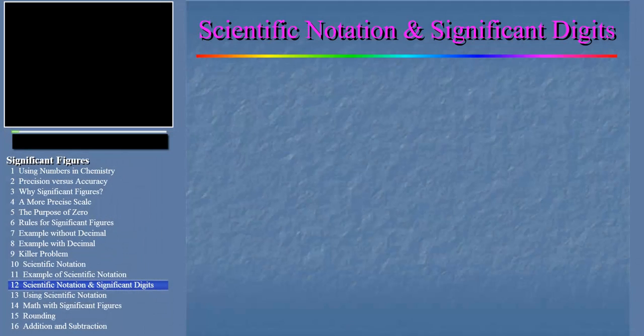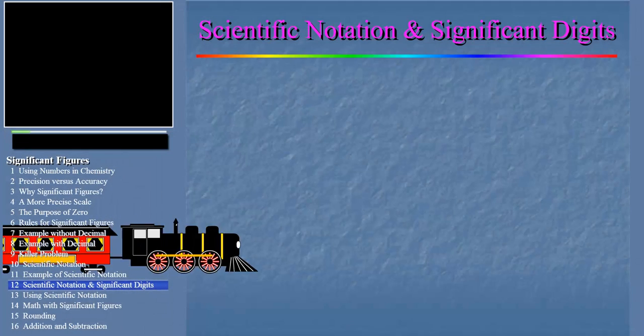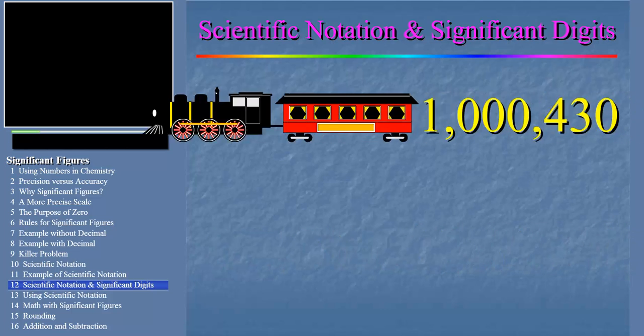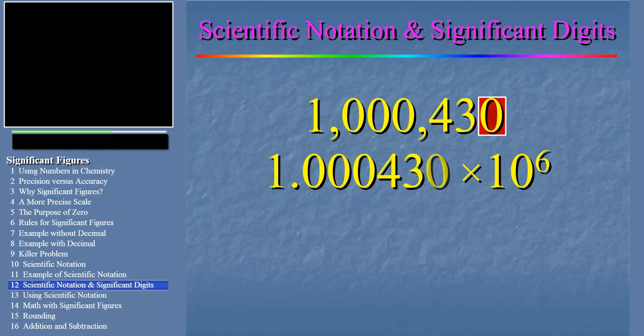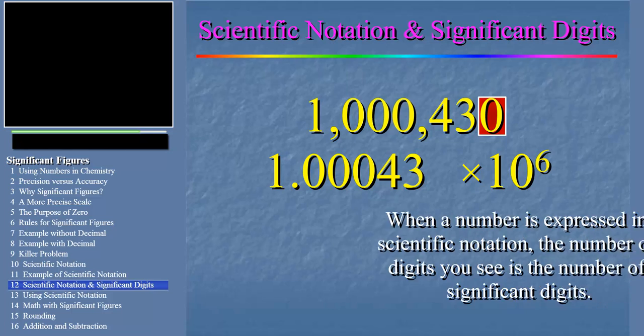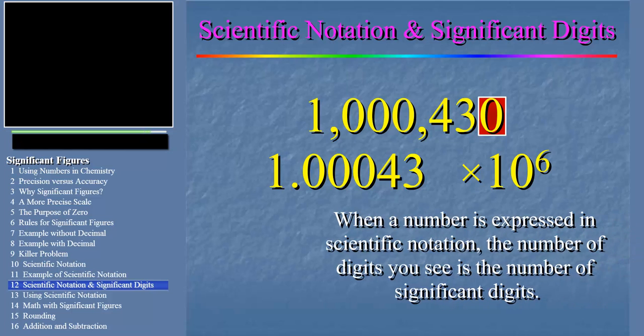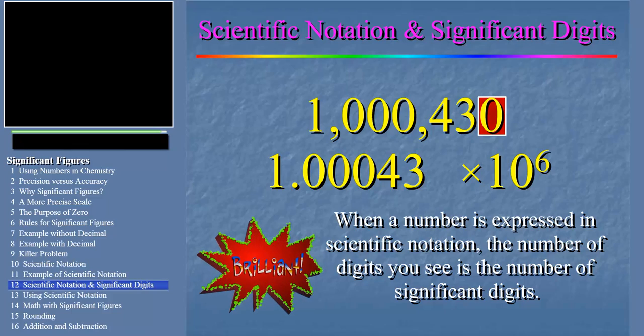Remember I mentioned that writing numbers in scientific notation can avoid ambiguities? Let's look at our previous example, 1,430,000. When the number is written like this, until you look at it closely you might be fooled into thinking that it has seven significant digits. That is, you might not notice that the last zero is not significant. Now convert this number to scientific notation. Notice that when this is done properly, the zero isn't needed as a placeholder anymore and doesn't appear at the end of the number. So in this form, the number of significant digits you see is the number of significant digits. Isn't that great?